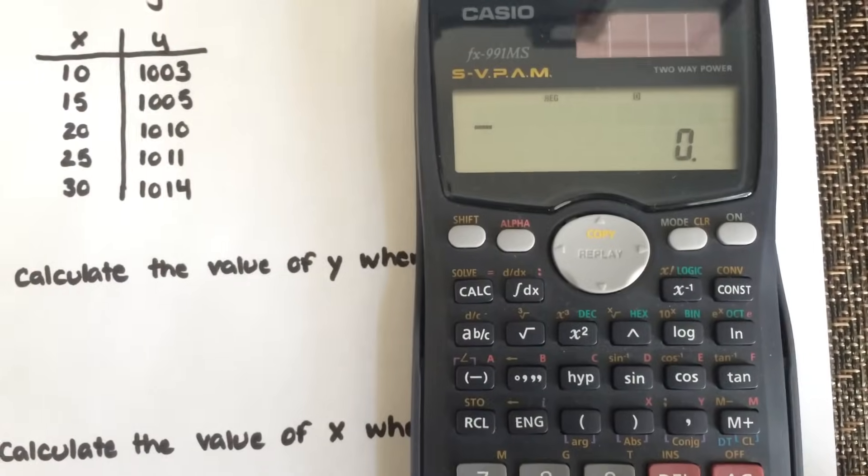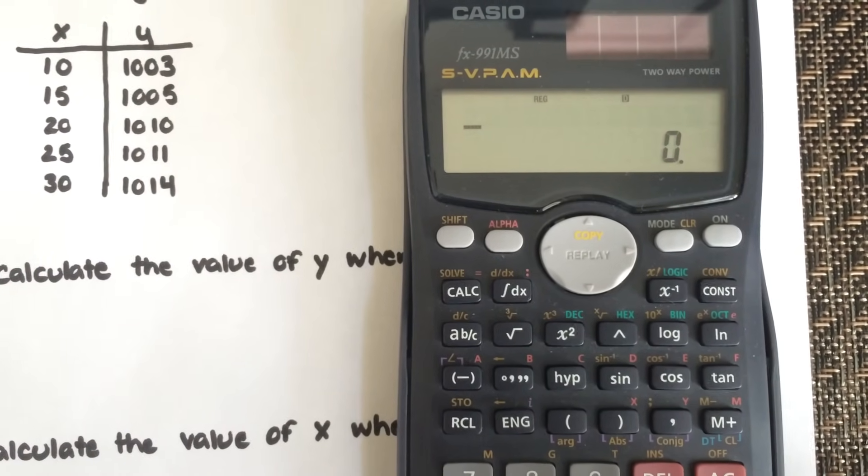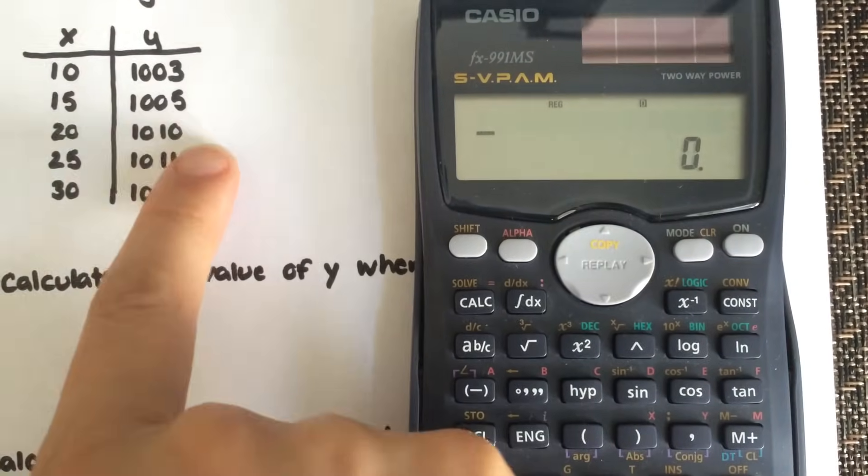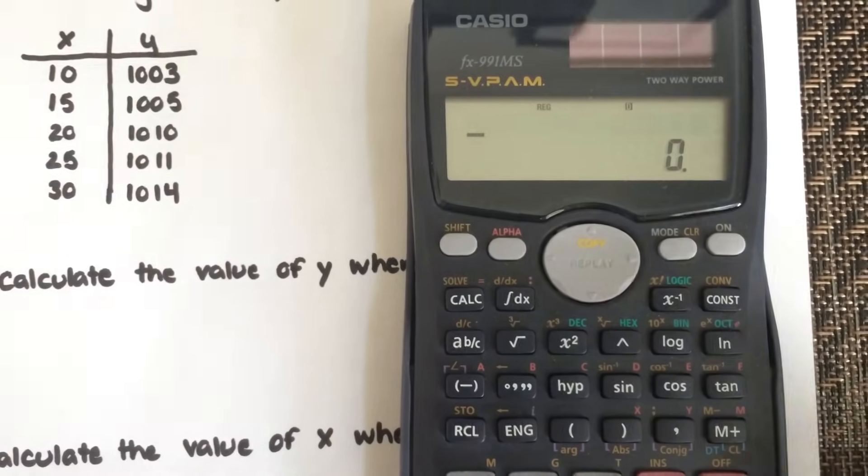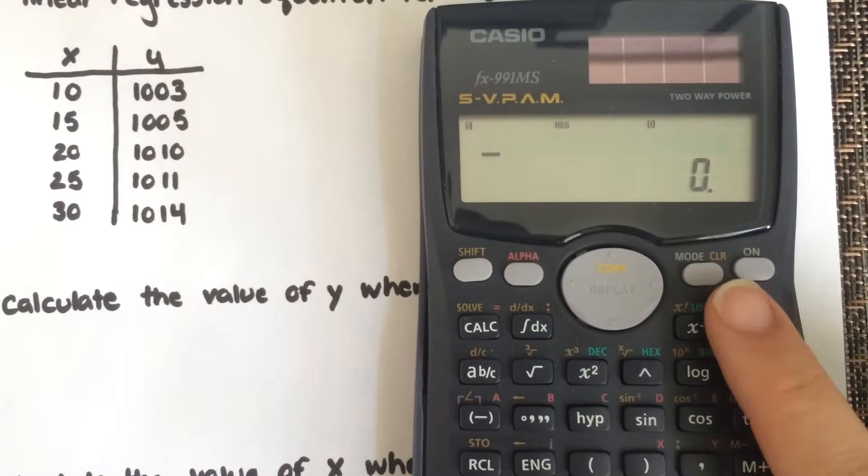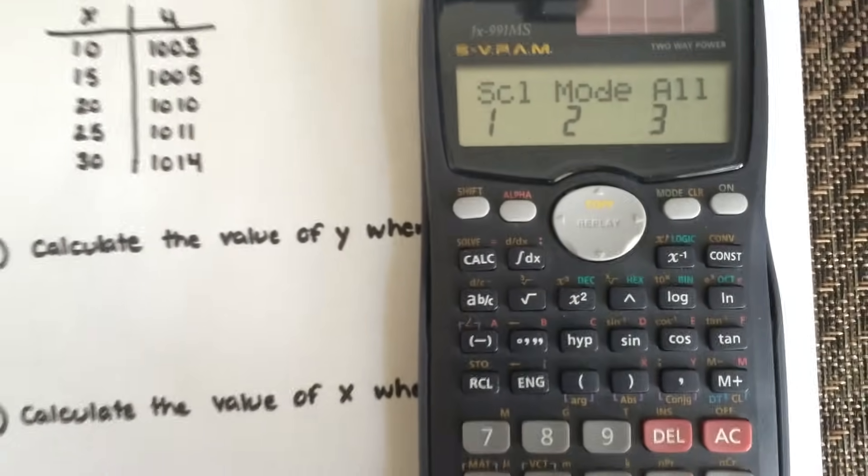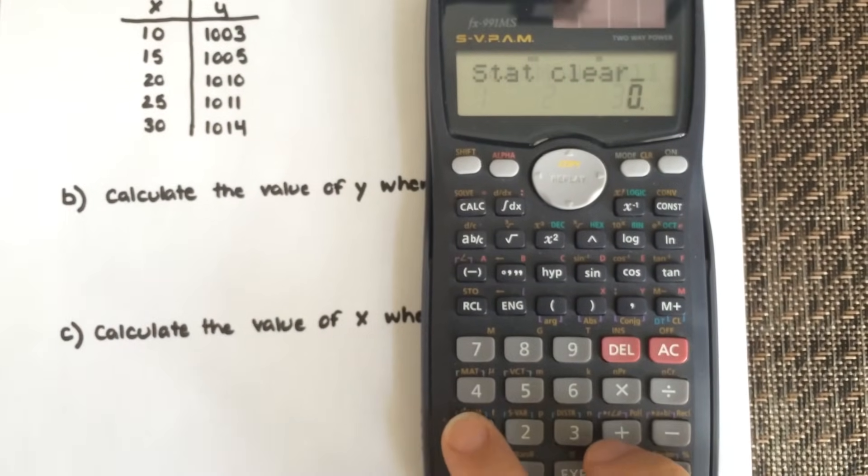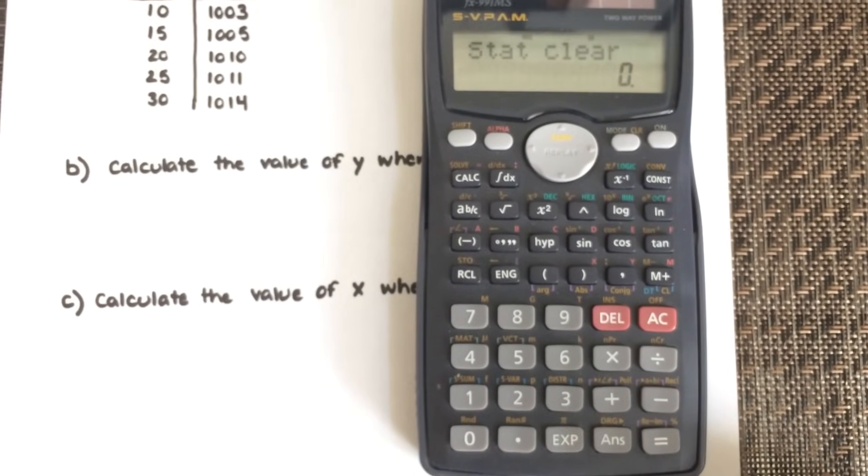There might be data that you've entered previously or data in your calculator. You want to make sure that's been cleared and you're entering a fresh set of data. The first thing you're going to do to clear that data is just hit shift, and then same button as mode, beside it is clear. Then you're going to select 1 to clear the data and enter. So all data has been cleared previously.